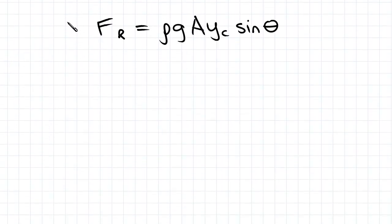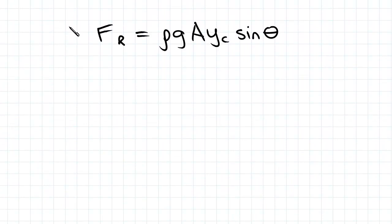We're going to be using FR equals rho g A Yc sin theta. In this case, we won't have to derive the formula. We're just utilizing it and we're going to sub in values for each of these terms. We're going to have to find them first.